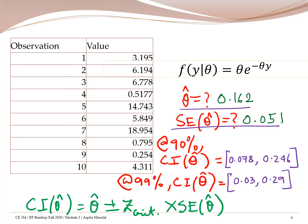The 99% confidence interval is wider, which is intuitive: if you assume a wider range, you are more certain the value lies within it. If you narrow it down, there's a possibility the estimate lies outside. That's all about finding the MLE estimator and its associated confidence interval for one single parameter theta. In the next video, we will look at how to estimate multiple parameters at the same time.